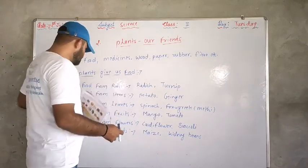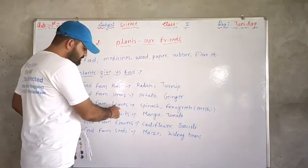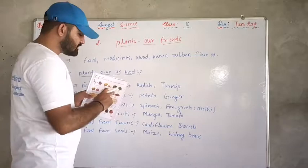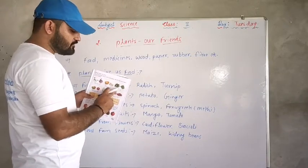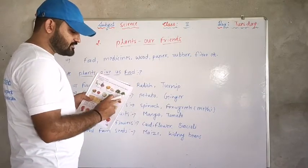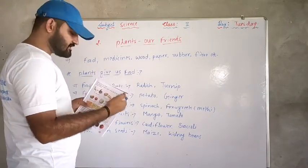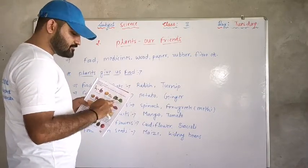Next is food from leaves. Food from leaves — this is a category.